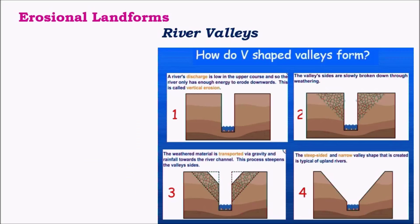Fluvial landforms are divided into erosional and depositional landforms. Fluvial erosional landforms mainly begin with the formation of a river valley. In the initial stages, where the river starts from a source, it mainly forms a V-shaped valley. As water flows from a source, vertical erosion becomes significant, and the softer strata on the surface is completely eroded due to this vertical erosion, creating a deep river bed.